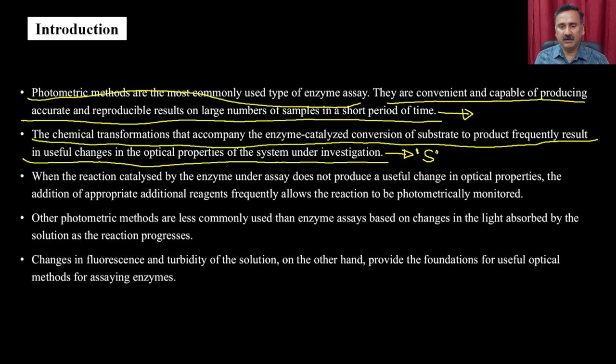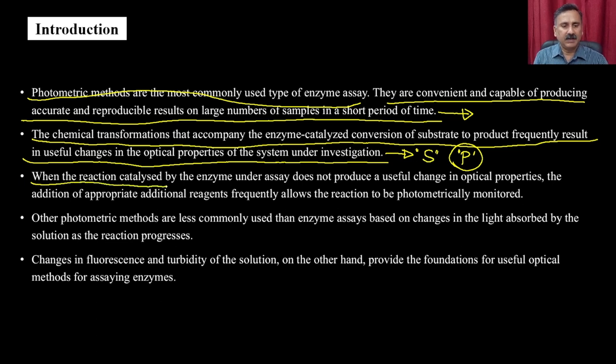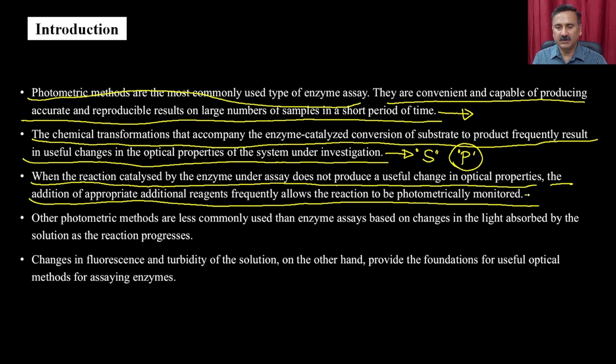Either there will be a change in substrate absorbance or a change in product absorbance. When the reaction catalyzed by the enzyme does not produce a useful change in optical property, the addition of an appropriate additional reagent frequently allows the reaction to be photometrically monitored. In such cases, neither the substrate nor the product are exclusive, so you add a coloring agent that reacts with substrate or product to produce a color change.